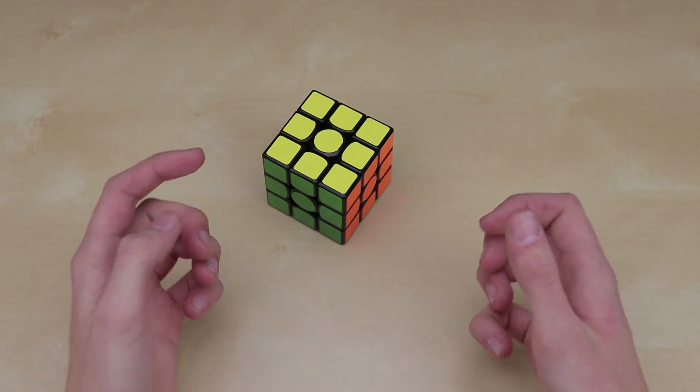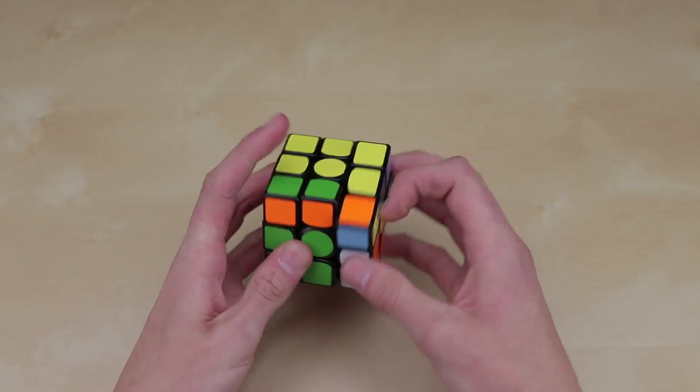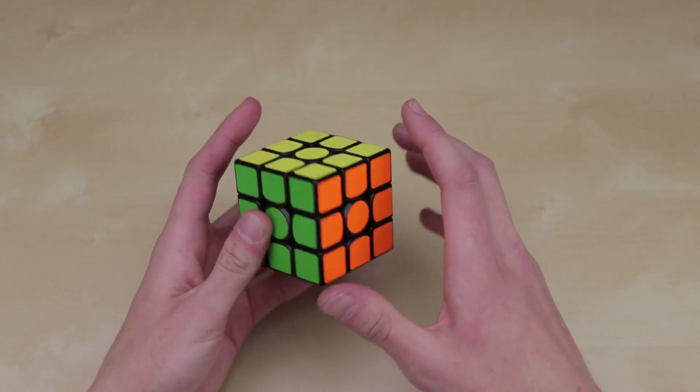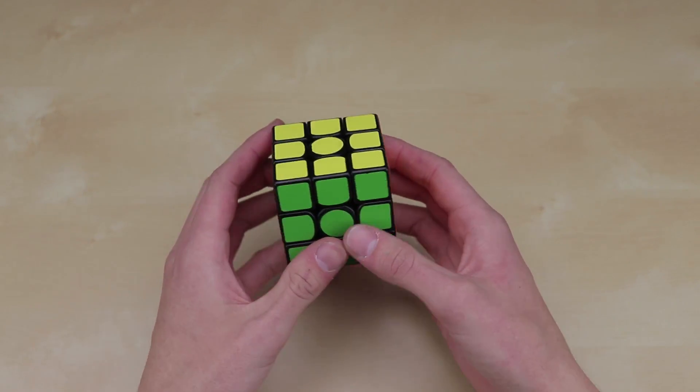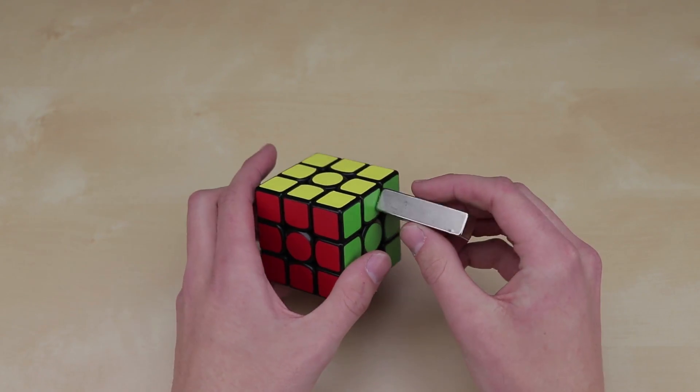The other day I had an interesting idea about magnetic cubes. Most high-end speed cubes nowadays have magnets in them so that the pieces snap together and add stability to the turning. It creates a really nice feel. So I was wondering if you took a really giant magnet and stuck it up to a puzzle, if you could feel those magnets in there. And you definitely can, it does stick to the puzzle as you can see.